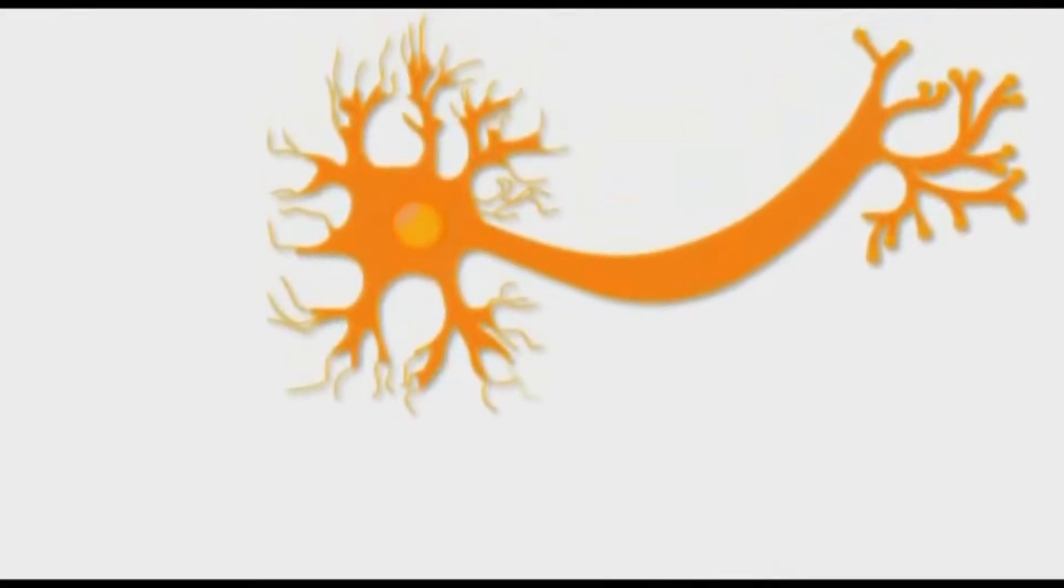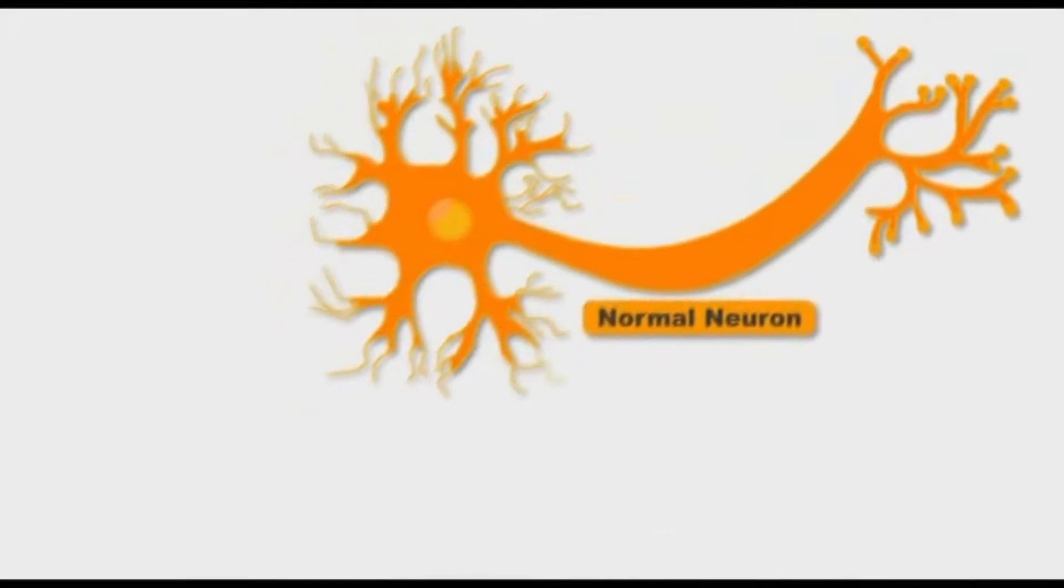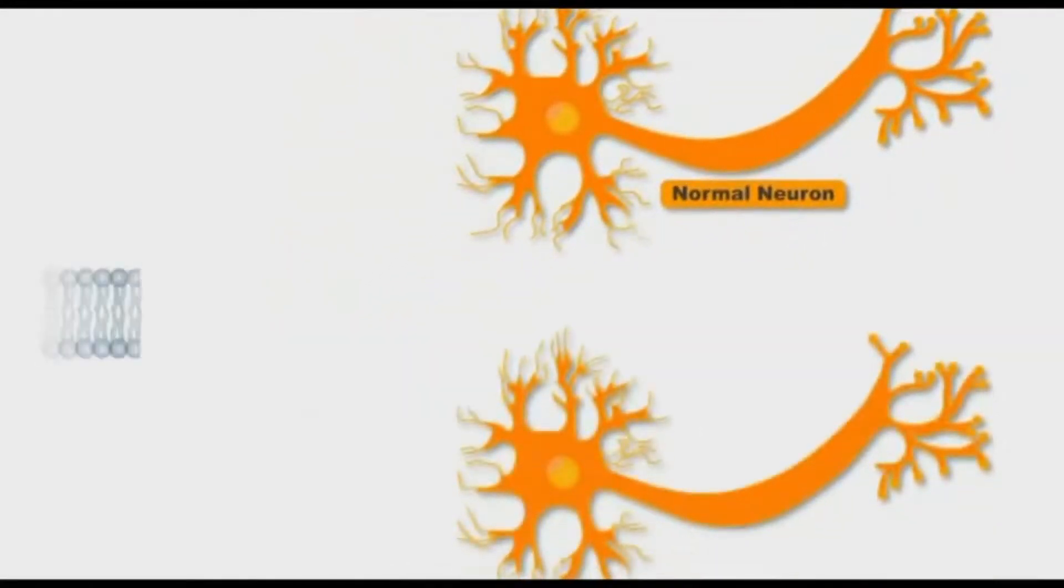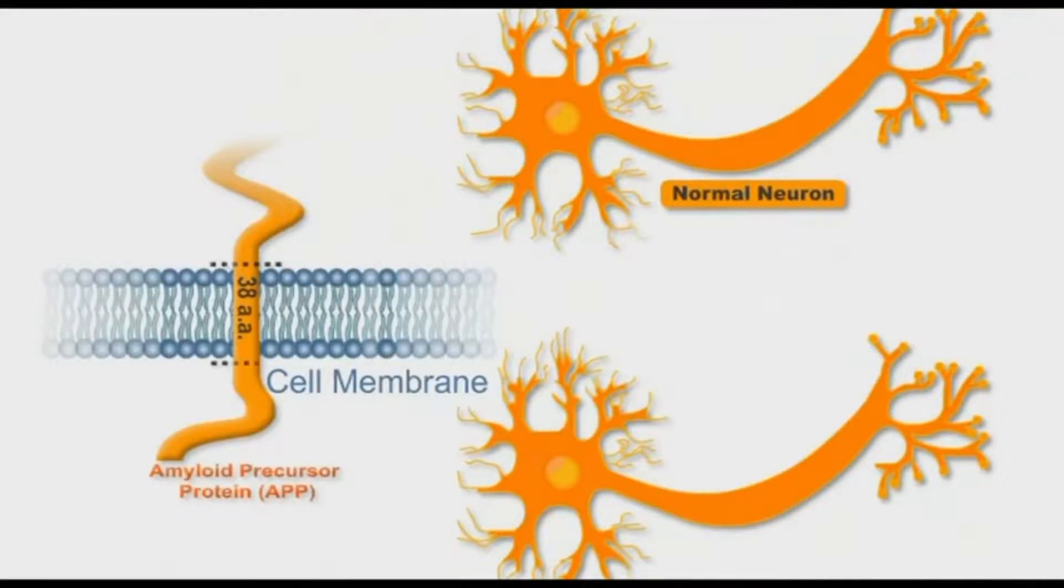Let's go now to understand the other important pathological finding in Alzheimer disease, which is the amyloid plaques. In the healthy brain, there is a natural protein that crosses the nerve cell membranes. It is called amyloid precursor protein or APP.